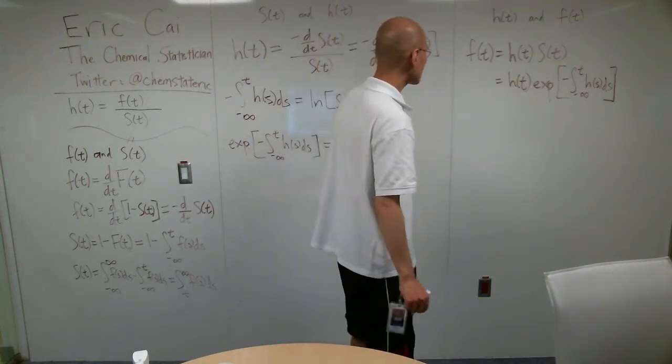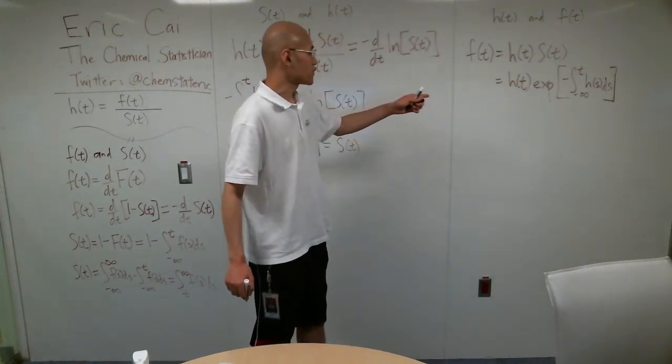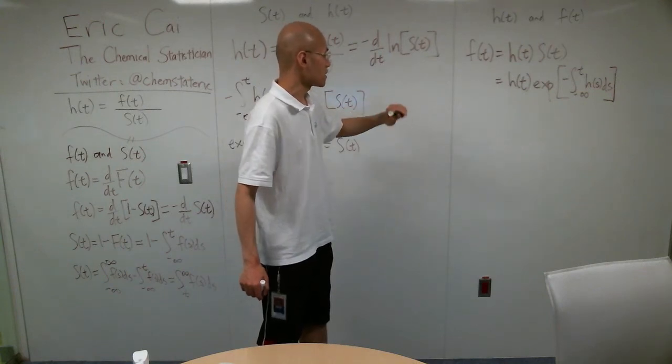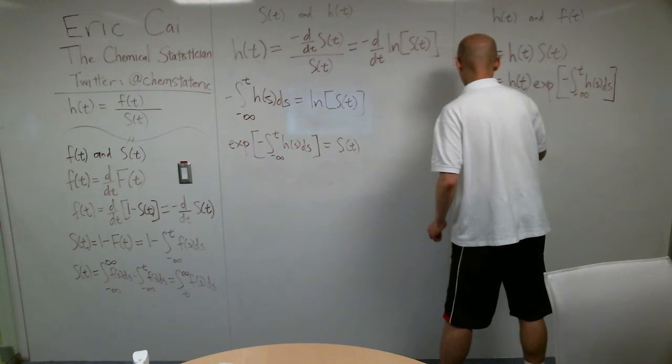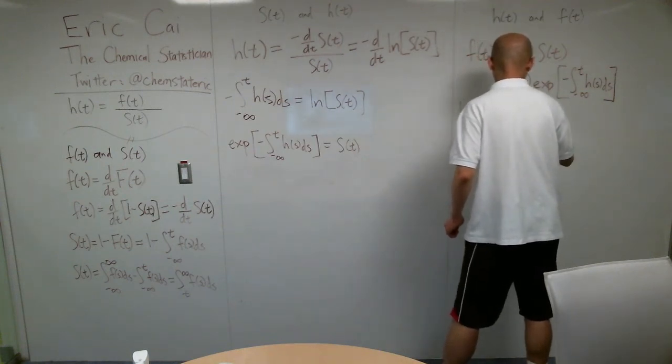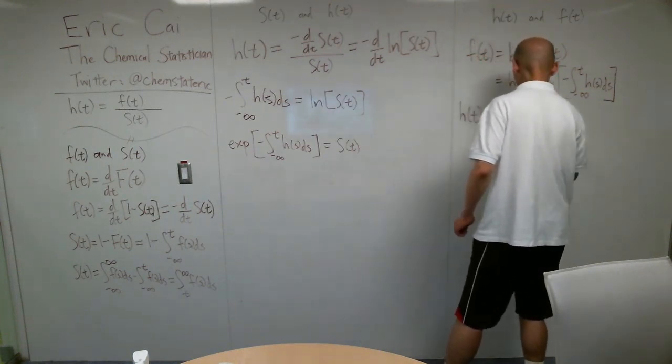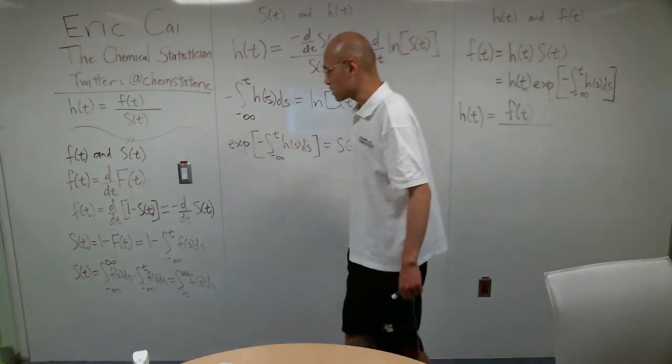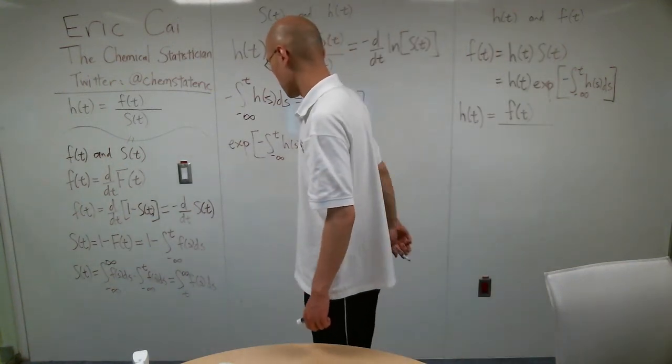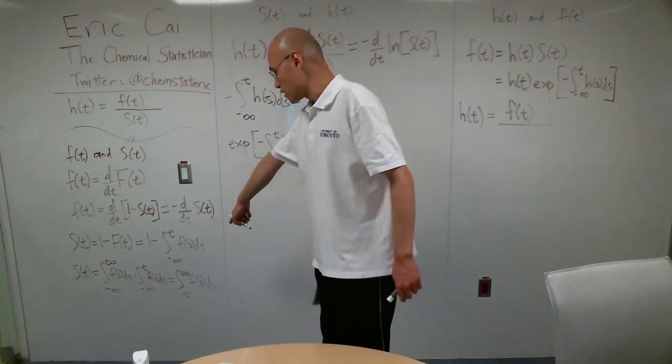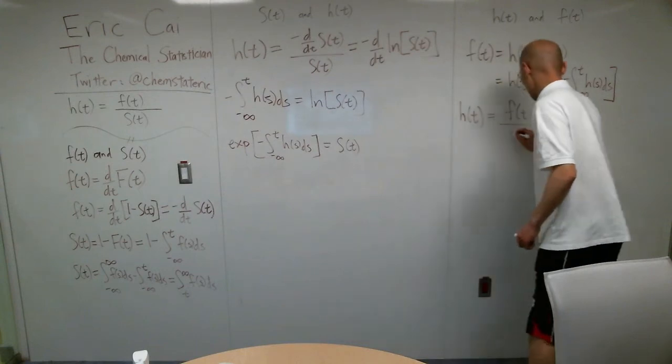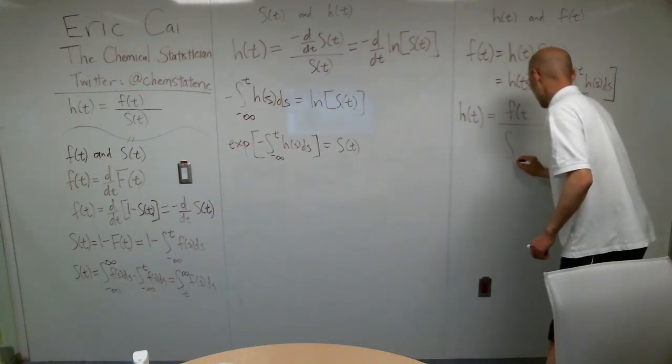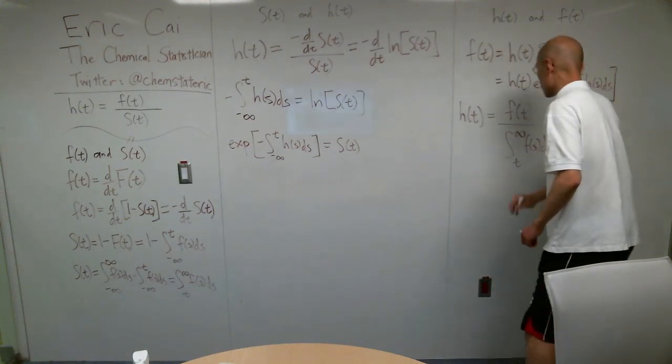Now, let's write h of t as a function of f of t. So we know that h of t is equal to f of t divided by S of t. And S of t is equal to that integral down there. And there we have it.